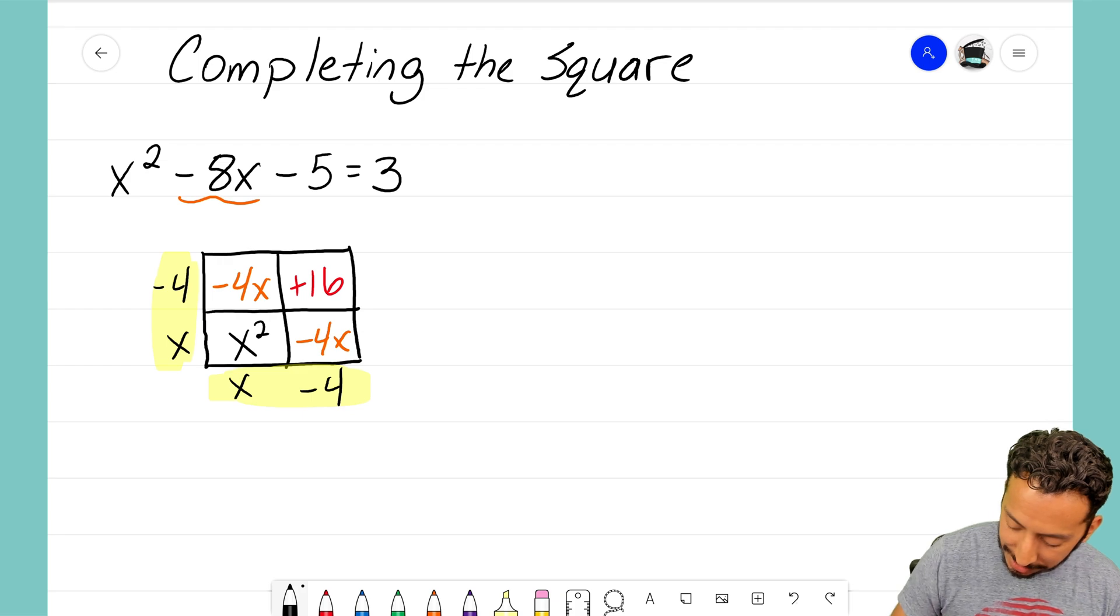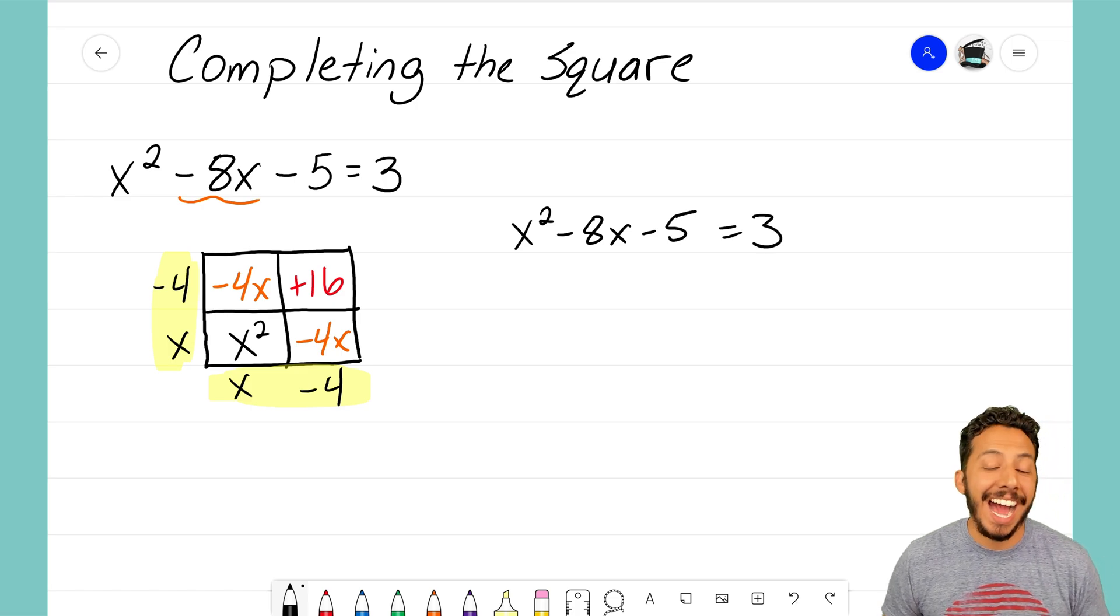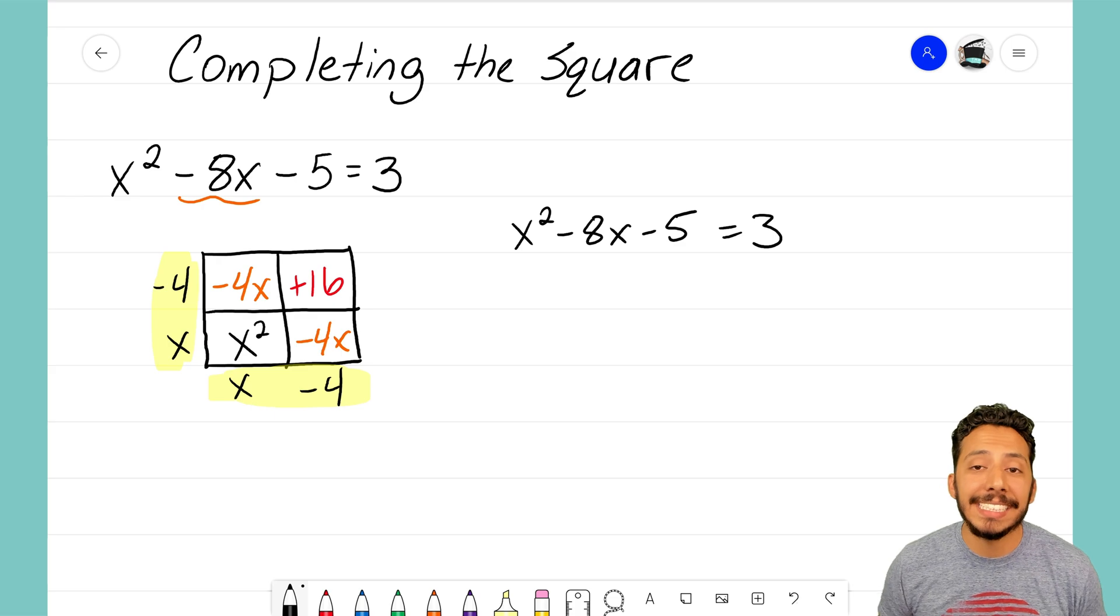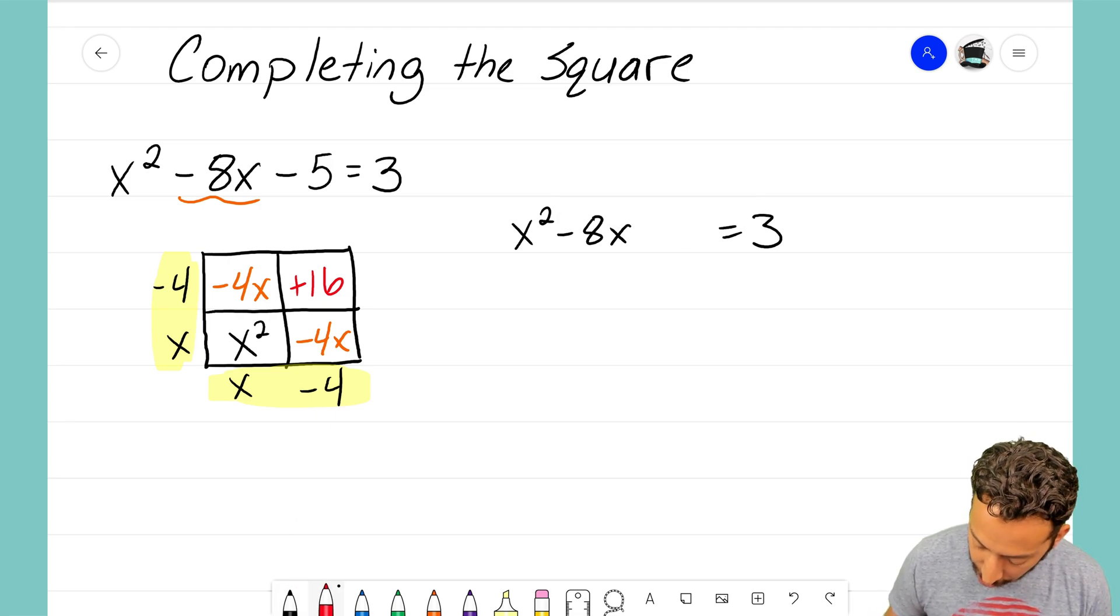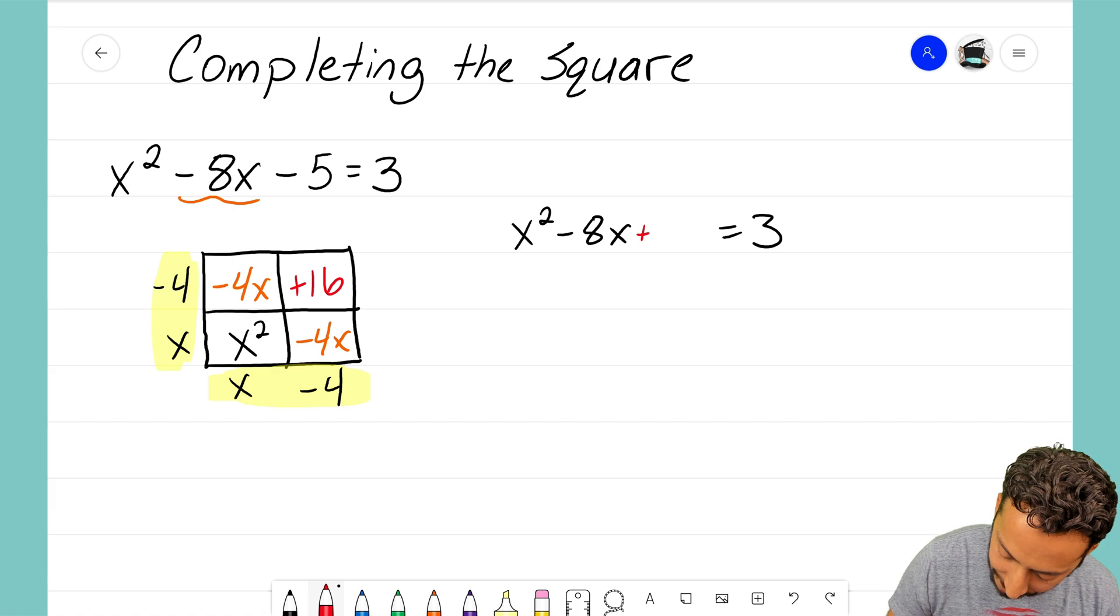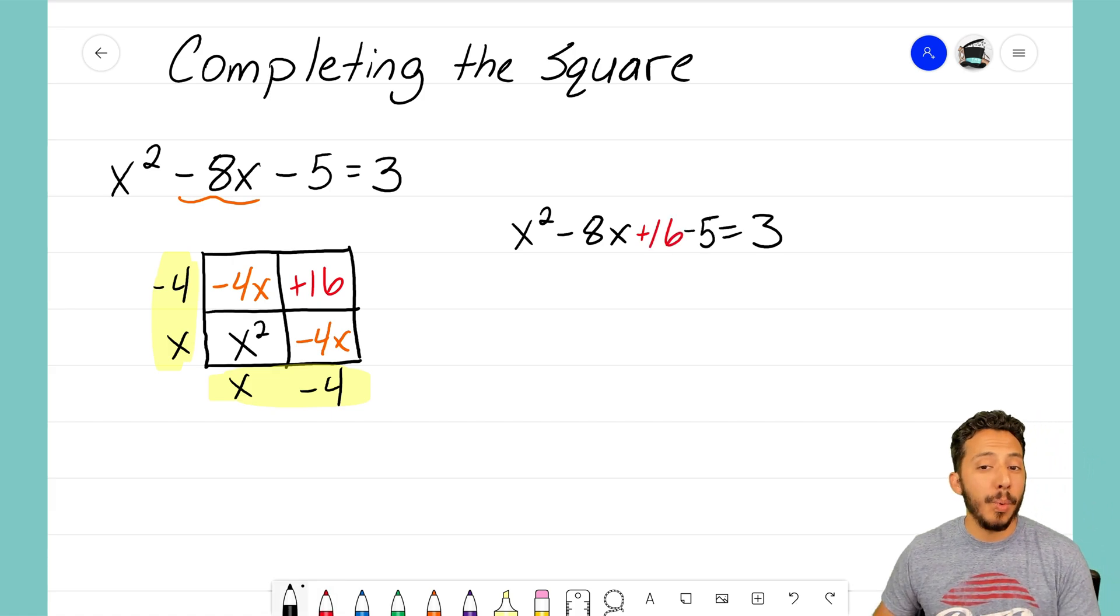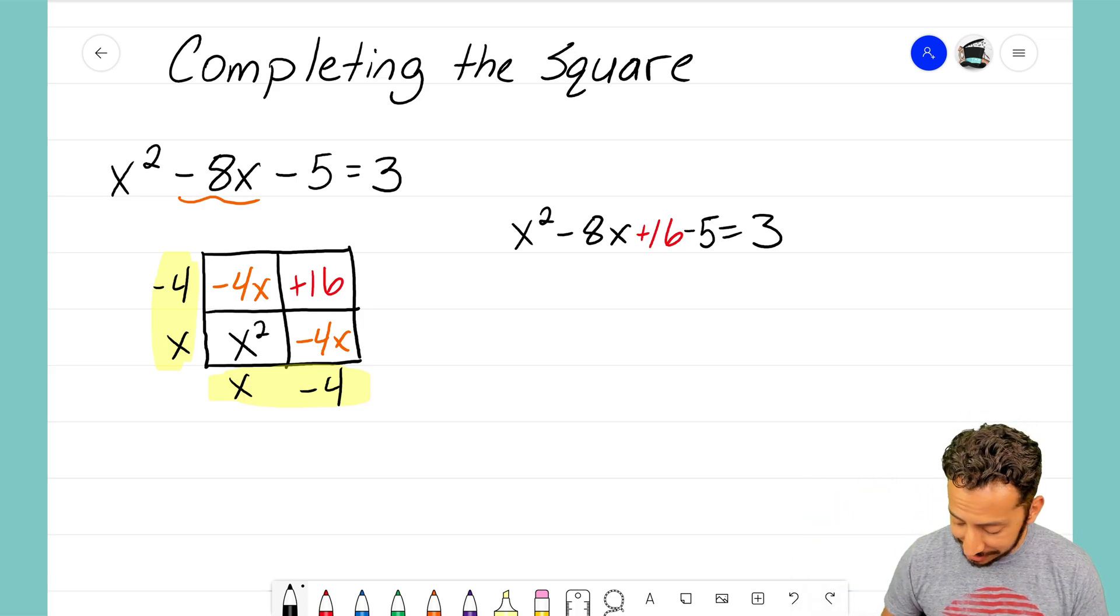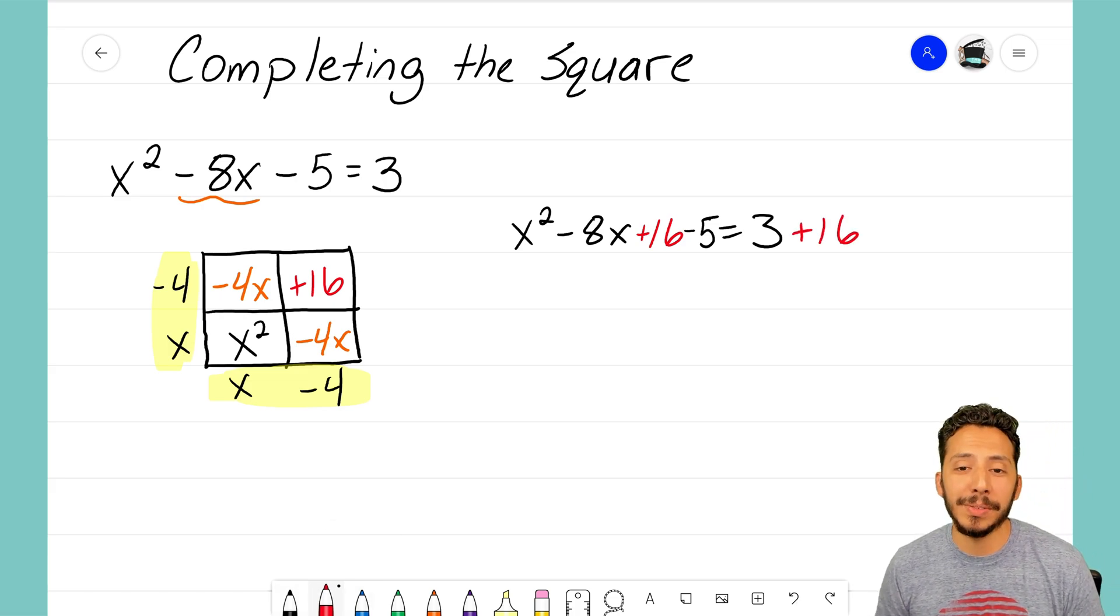So now what I'm going to do is I'm going to take that equation, the x squared minus 8x minus 5 equals 3. I know though that I'm going to need to add 16 to both sides so that I can start to solve this problem. So what I'm going to do is I'm going to erase that negative 5 in there so I can squeeze in the fact that I have to add 16 and then I'm going to add back in the minus 5. Well I added 16 to the left side, I've got to make sure I add 16 to the right side as well. So I'm going to show that by writing plus 16 on both sides.